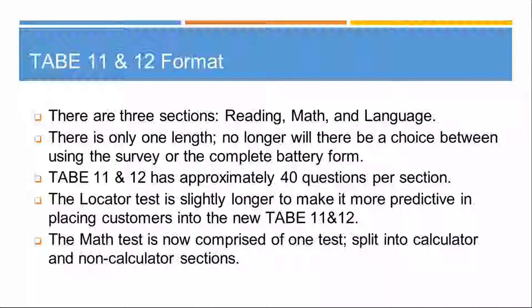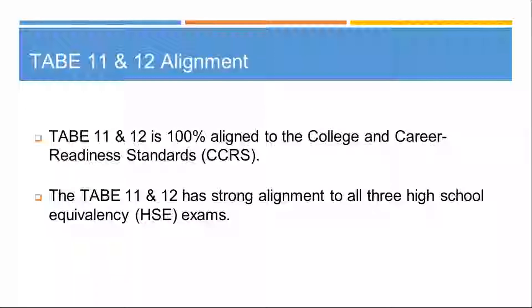The locator has 16 questions and includes three two-part questions in reading. The math test is now one test split into a calculator and non-calculator section. TABE 11 and 12 is 100% aligned to the College and Career Readiness Standards. Illinois offers all three high school equivalency tests — the TASC, the HiSET, and the GED — and TABE 11 and 12 is strongly aligned to all of those.